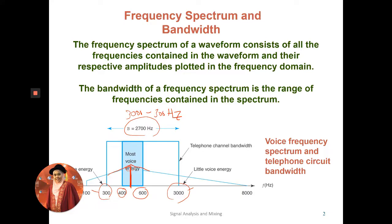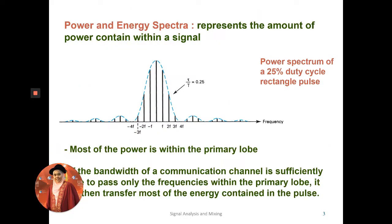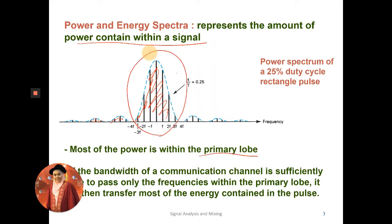When looking at the frequency spectrum, it contains the power that the signal has. The area below the spectrum line represents the signal's power. As an example, the power spectrum of a 25% duty cycle rectangular pulse shows that most power is within the primary lobe. A communication channel with sufficient bandwidth passes frequencies within the primary lobe, transferring most of the energy content.